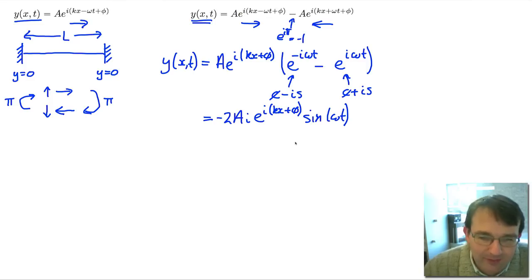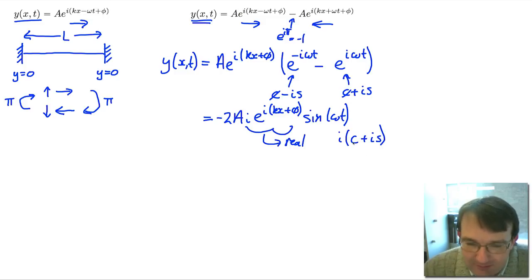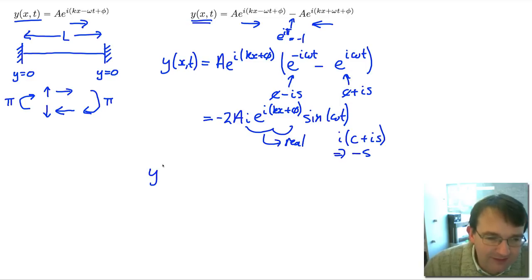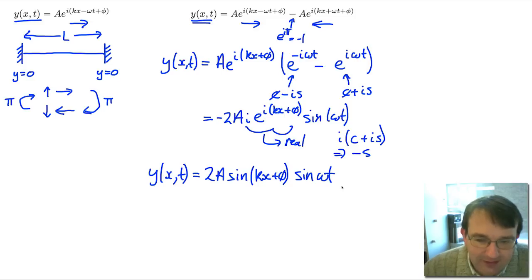So this gives us minus 2Ai times e to the i(kx plus phi) times sin(omega t). Now remember we're using the implied real notation, so we want the real part of this expression. Since e to the i(kx+phi) gives i times cosine plus i times sine, the additional i out front means the real part picks up a minus sine term. So the displacement as a function of position and time is: y(x,t) = 2A sin(kx + phi) sin(omega t).